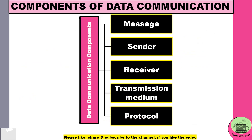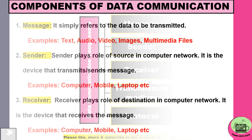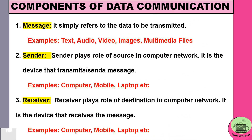Which are the five components of data communication? First is the message, second is the sender, third is the receiver, fourth is the transmission medium, and fifth is the protocol. Now we will see these components one by one.